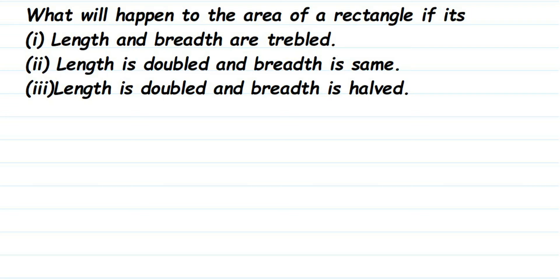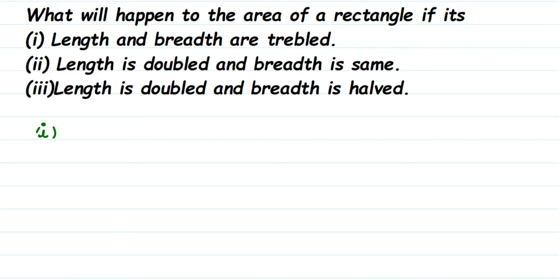Here is a question on mensuration. The question is: what will happen to the area of a rectangle? There are three conditions. The first one is length and breadth are tripled. Triple means three times more. We are going to solve each condition one by one.